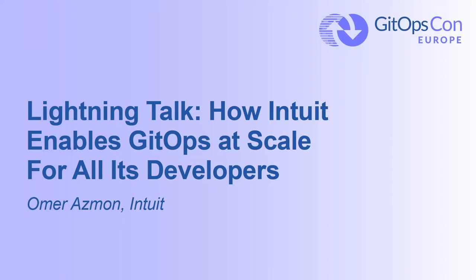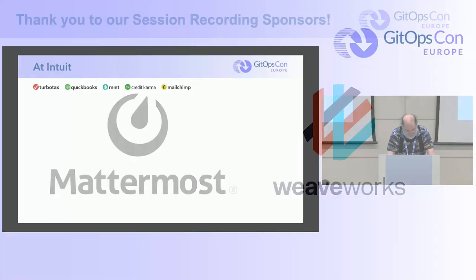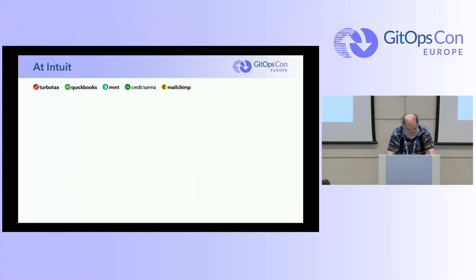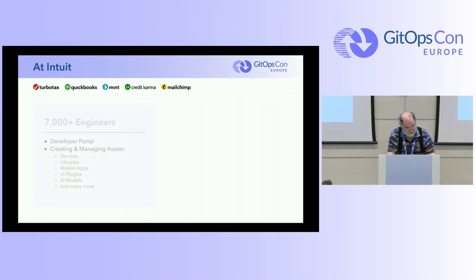This is the story of how at Intuit we got GitOps to all our developers, and what it really takes to enable front-end, back-end, and AI developers — everybody — to rapidly create, update, and dispose (very important) of applications.